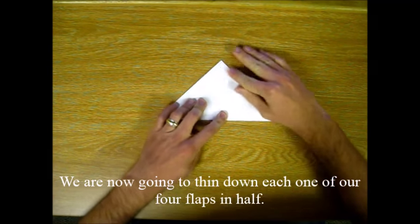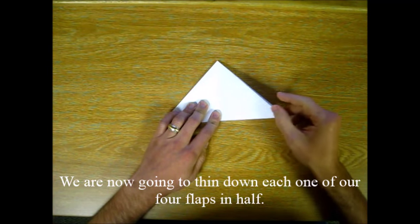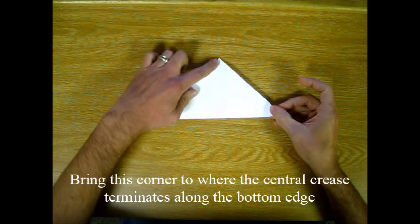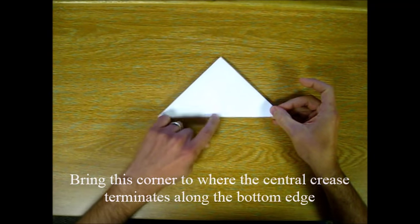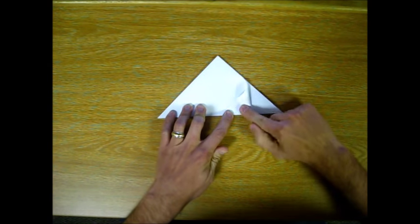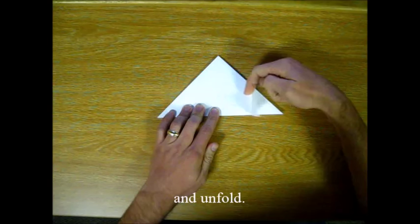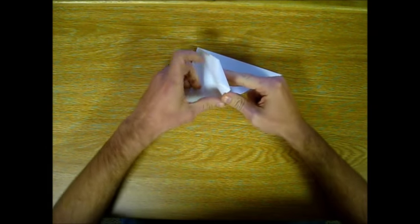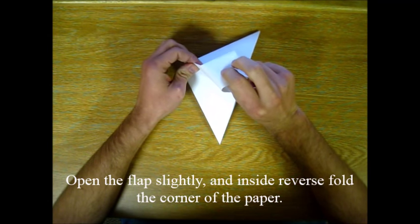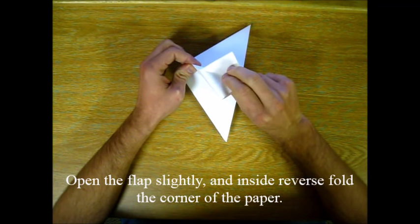We are now going to thin down each one of our four flaps in half. Bring this corner to where the central crease terminates along the bottom edge. And unfold. Open the flaps slightly and inside reverse fold the corner of the paper.